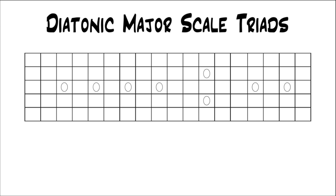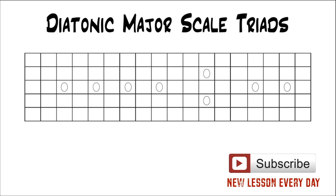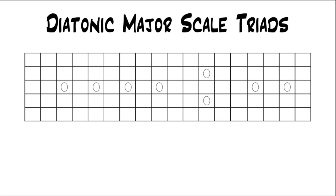For example, root moves to 3, 3 to 5, and 5 back to root. In this lesson, I'm going to show you how it actually relates to the major scale. And we're going to be talking about major, minor, and diminished triads, because they're diatonic to the major scale. Diatonic just means that they are notes within a certain key or scale — so notes diatonic to the major scale, or intervals that can be found in the major scale.